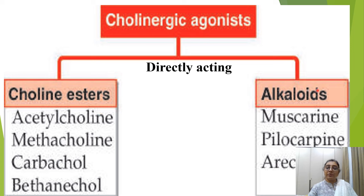The alkaloid group includes muscarine, pilocarpine, and arecoline. These three drugs are from the alkaloid source.